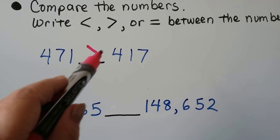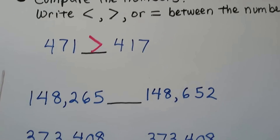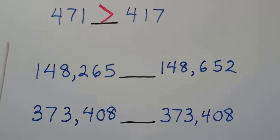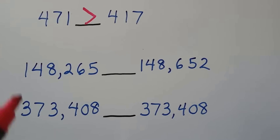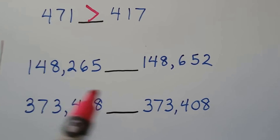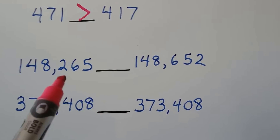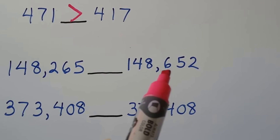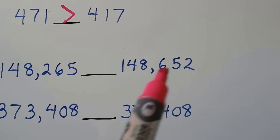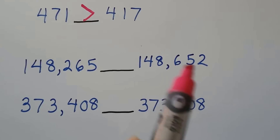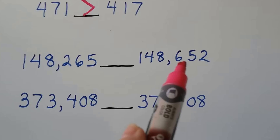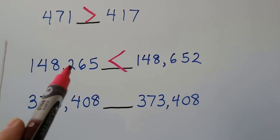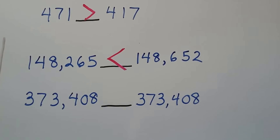The big mouth faces the bigger number. Now look at these two larger numbers — they both have 100,000, they both have a 4 in the ten-thousands place, and they both have an 8 in the one-thousands place. But look at the hundreds place: one only has a 2, the other has a 6. Even though they have the same digits — a 2, a 6, and a 5 — they're in different places. That hundreds place has a 2, this one has a 6, so that's the greater number. So 148,265 is less than 148,652.